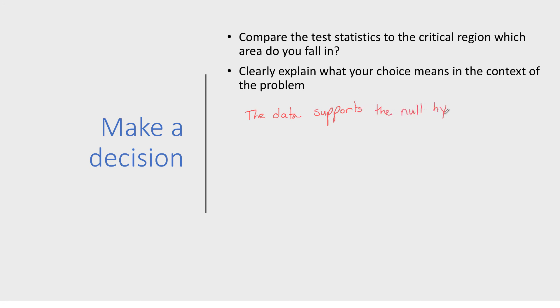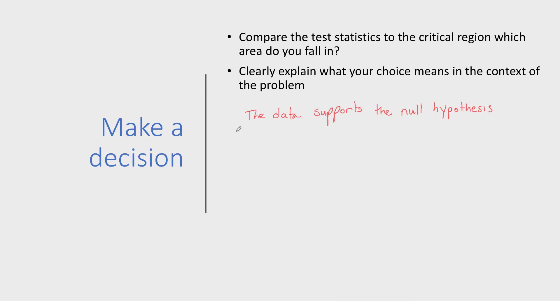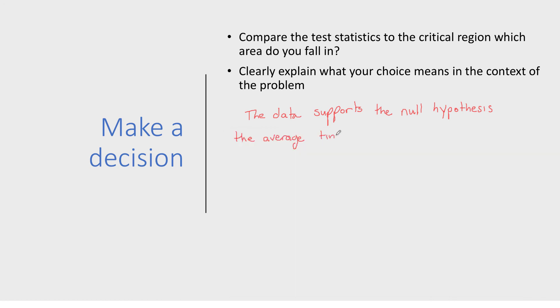Test statistics in the red region on those pictures support the alternative. The data supports the null hypothesis, but I also want to explain that in context of the problem. The average time per mile is 8.5 minutes. It's very important to explain it in the actual context of your problem, so it's clear what choice you're making for your research question.